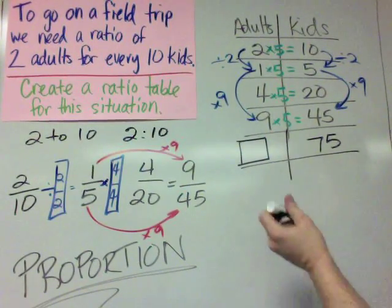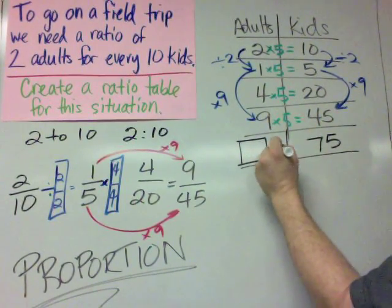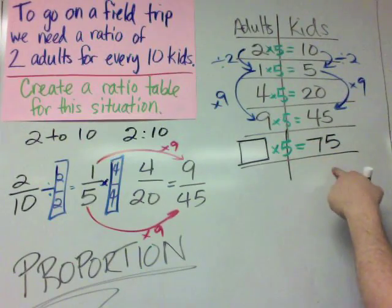One way to get it is to use this green horizontal pattern. Something times 5 is going to equal 75.